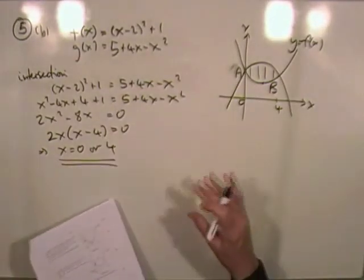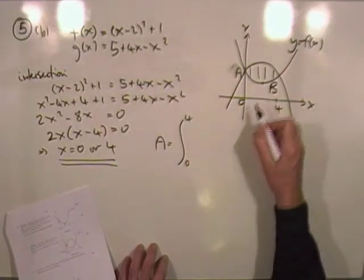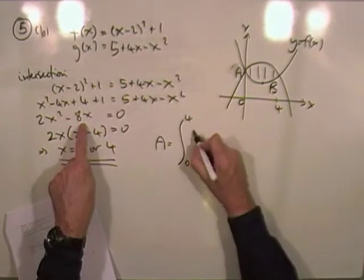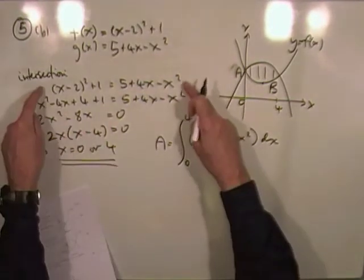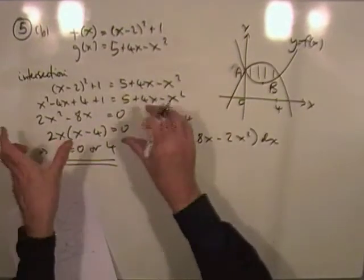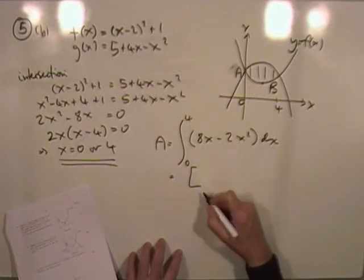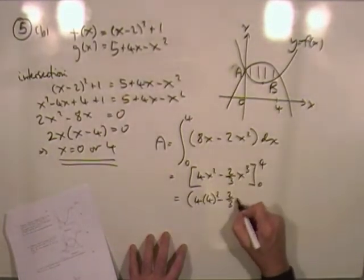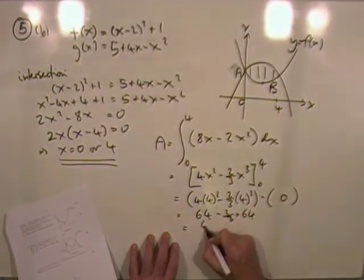The area equals the integral from zero to four of the top minus the bottom: g(x) − f(x) = 8x − 2x² dx. Integrating gives 4x² − (2/3)x³ from zero to four. Substituting x = 4: 4(16) − (2/3)(64) = 64 − 128/3 = 64/3 square units.